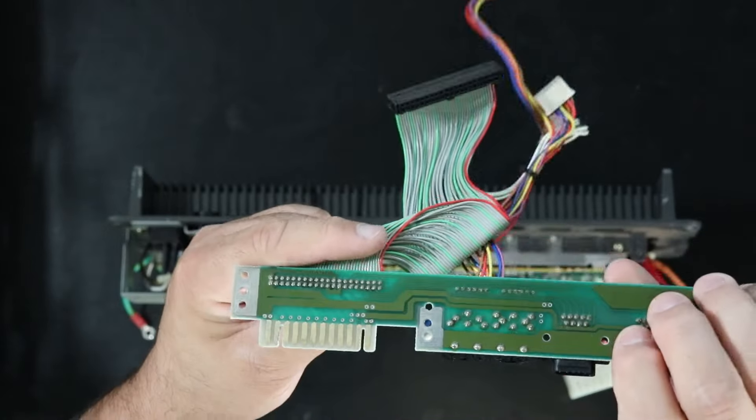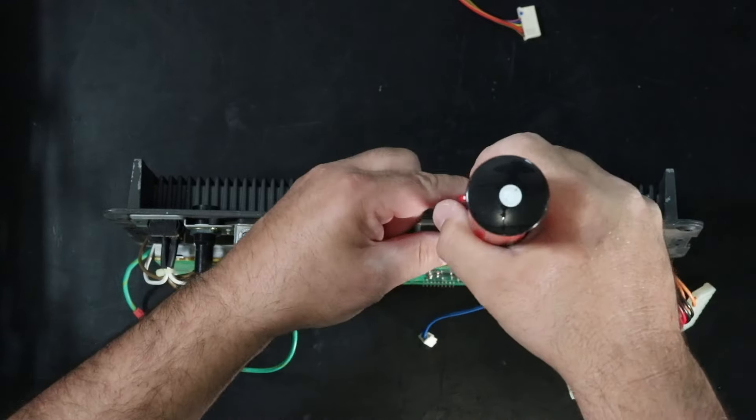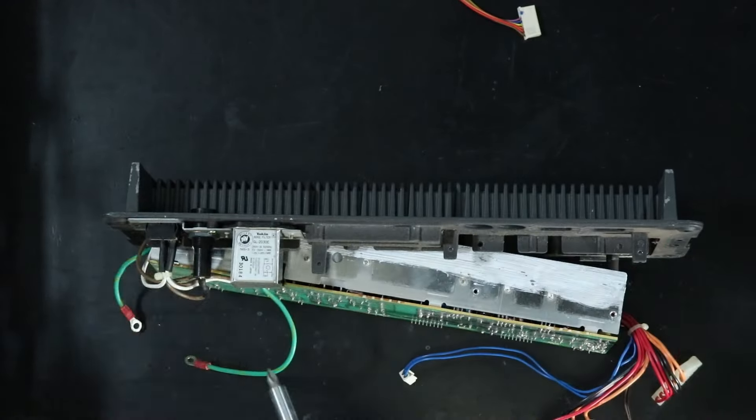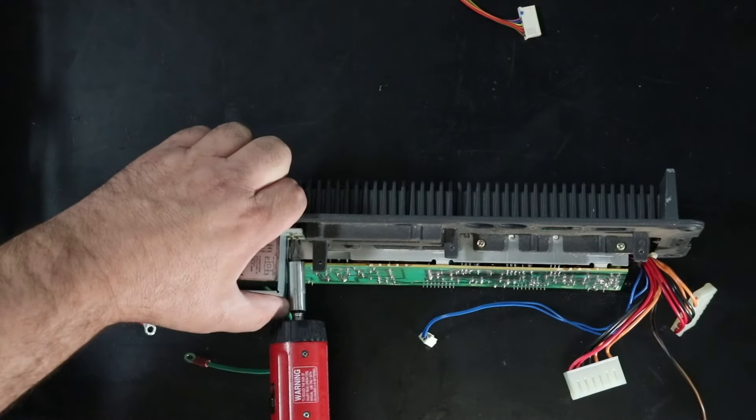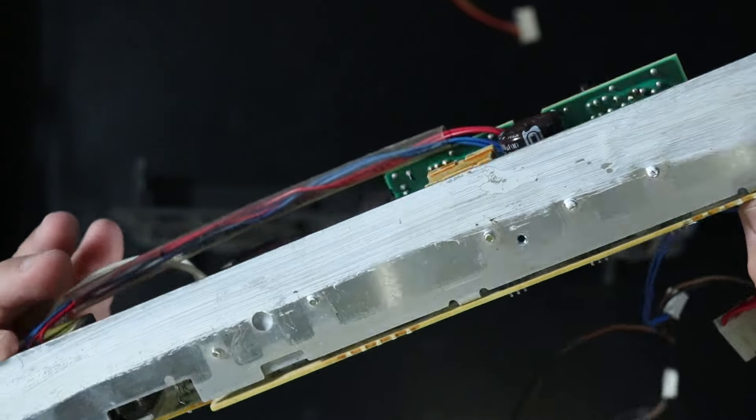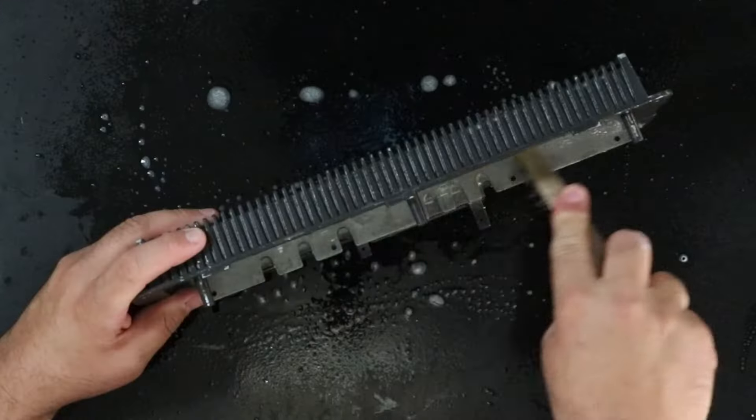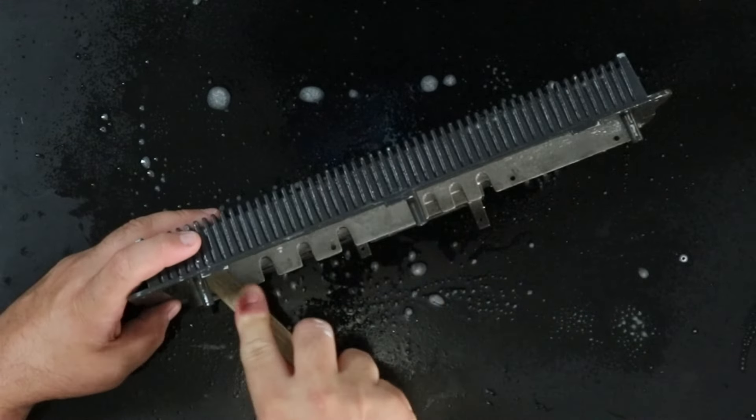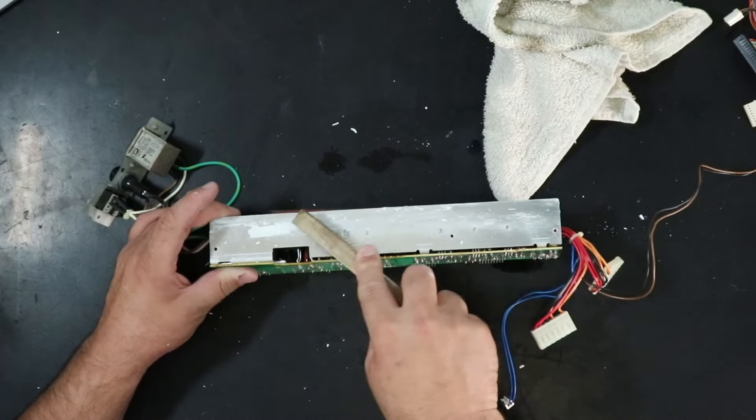The power supply board is held in by eight screws, five on the board itself and three on the heat sinks. You also have to remove this metal shield to access one of the screws. The thermal paste between the heat sinks is completely dried out, so much so that it just flaked off as I was removing it. I gave the cast heat sink a good cleaning and also cleaned the residual thermal paste off the circuit board's aluminum heat sink.